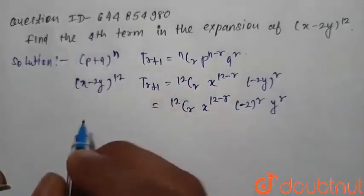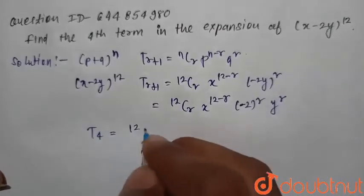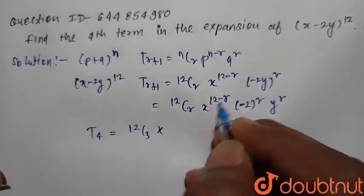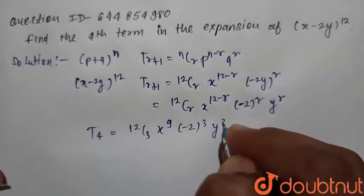We want to find the fourth term, so T4 means r = 3. Thus, T4 = 12C3 × x^(12-3) × (-2)^3 × y^3 = 12C3 × x^9 × (-2)^3 × y^3.